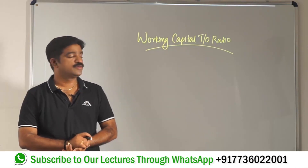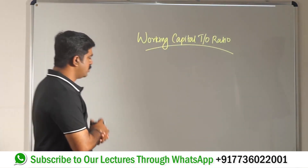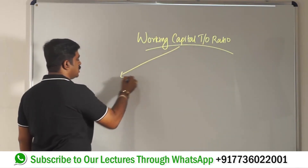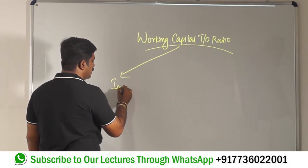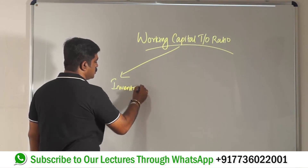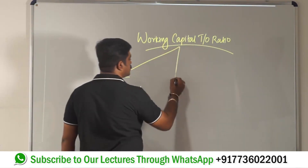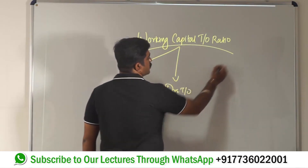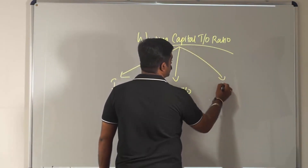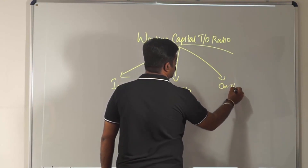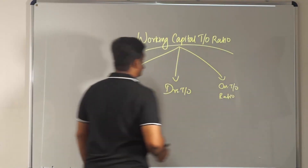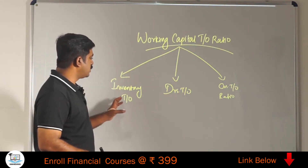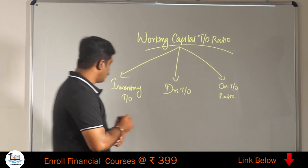Let's move on to the next set of turnover ratios — working capital turnover ratios. As already indicated, we have three ratios here: number one is inventory turnover ratio, then we have debtors turnover ratio, and creditors turnover ratio. In this session, let's see how to find out inventory turnover ratio, debtors, and creditors — all three.